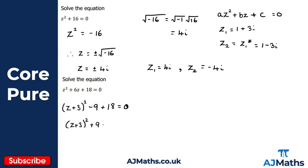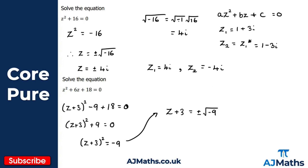Now solving for z: subtract 9 from both sides to get (z + 3)² = −9. Take the square root of both sides, giving z + 3 = ±√(−9). Splitting that up, √(−9) = √(−1) × √9 = 3i, so z + 3 = ±3i. Finally, subtract 3 from both sides, so z = −3 ± 3i.